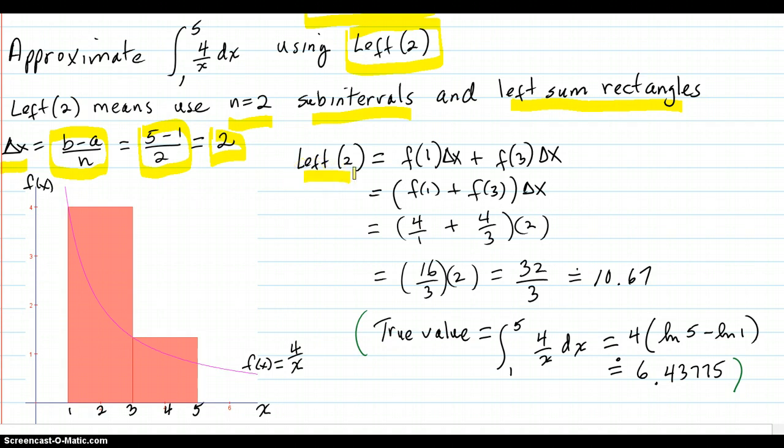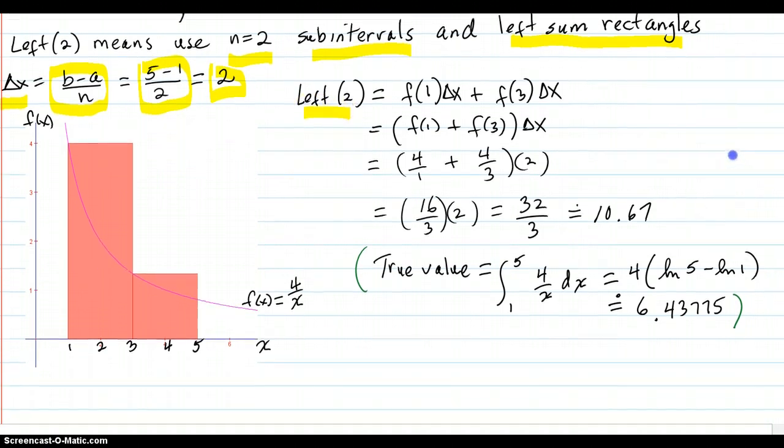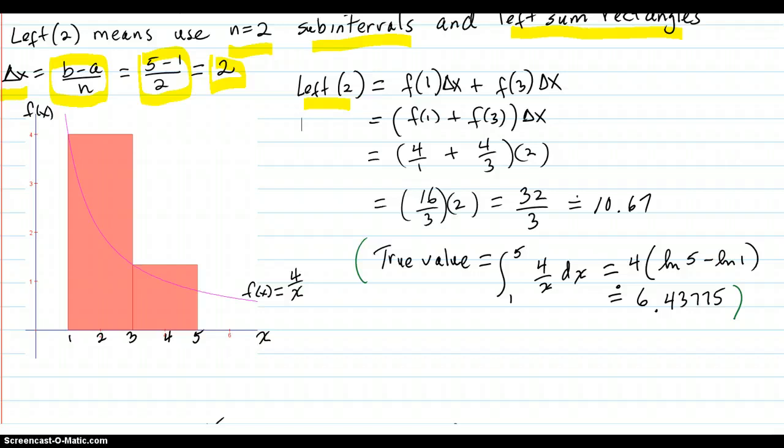So left 2 is f at 1, and that is because here's your 1 right here. The left rectangle method says for your sub-interval, here's your sub-interval from 1 to 3, because remember delta x is equal to 2 in this case.